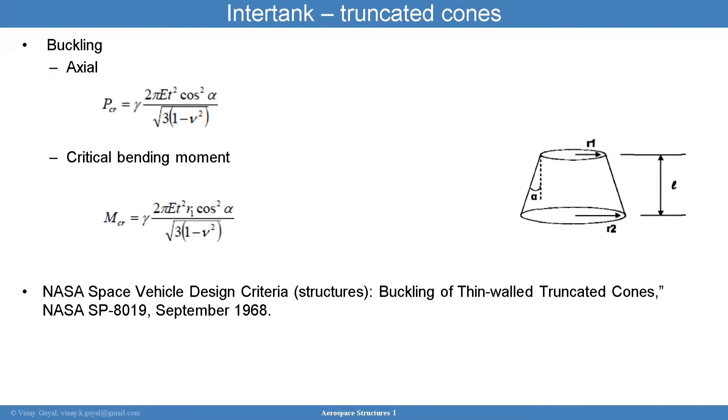The buckling loading for truncated cones you're going to encounter a lot. You can look at this paper SP-8019. That'll give you some sizing information on buckling. Basically the critical buckling load can be found to be 2 pi ET squared cosine squared alpha divided by square root of 3(1 minus nu squared). That's the axial buckling load. Gamma here is considered to be a correction factor.